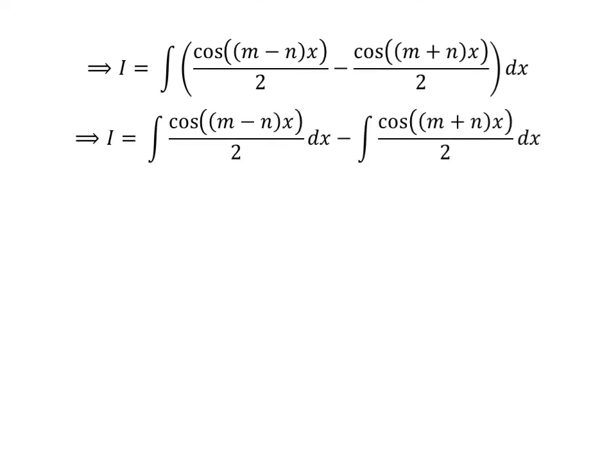Here, I have applied the linearity property of integrals, which gives us I equal to the integral of cos((m − n)x) upon 2 with respect to x, minus the integral of cos((m + n)x) upon 2 with respect to x.